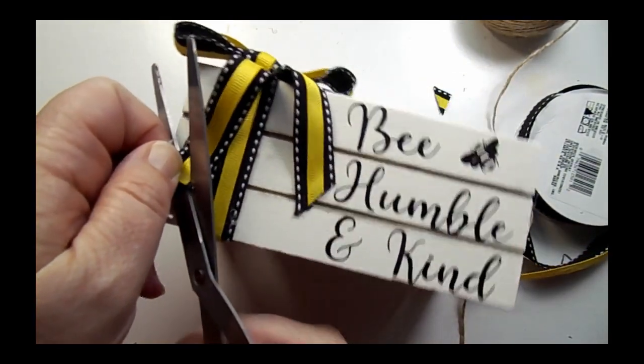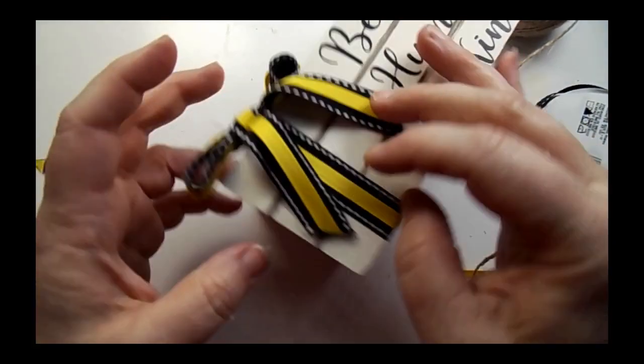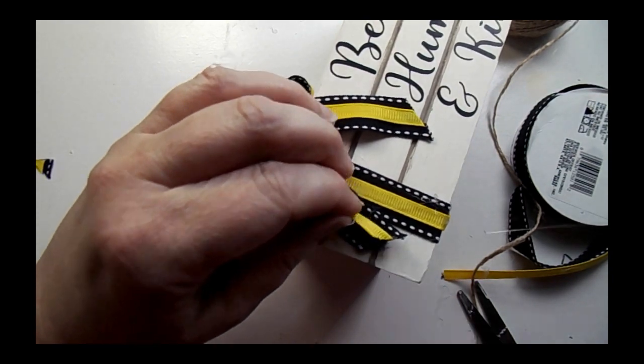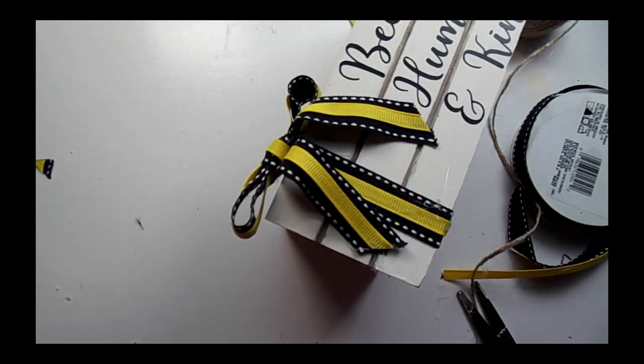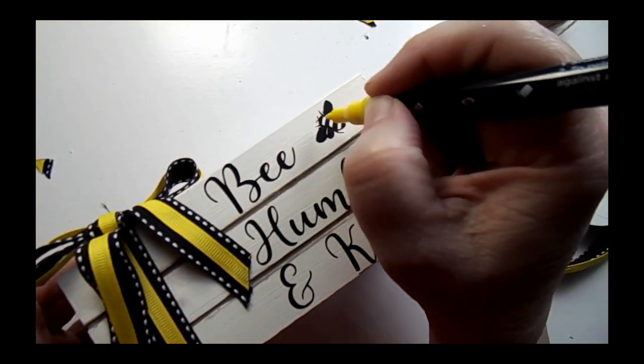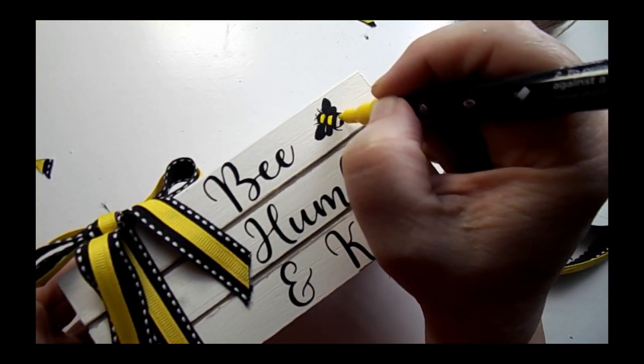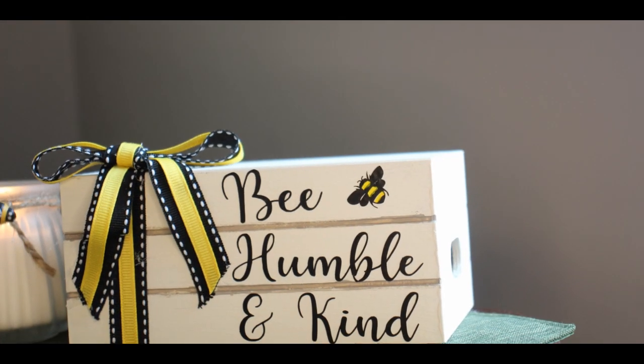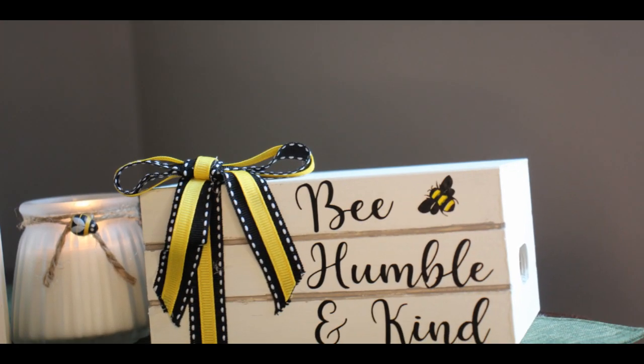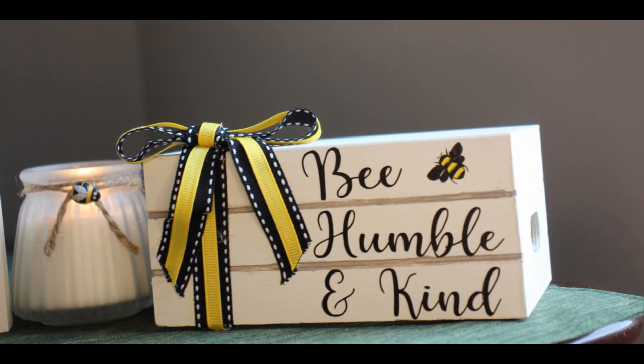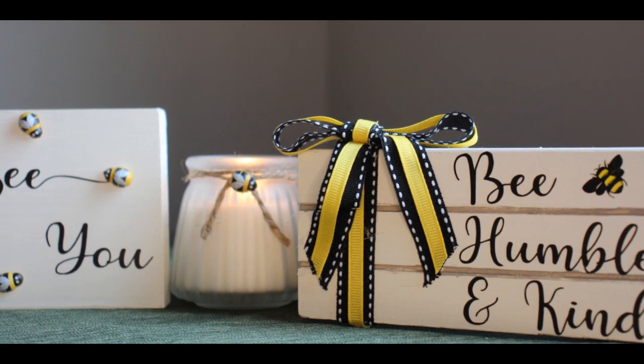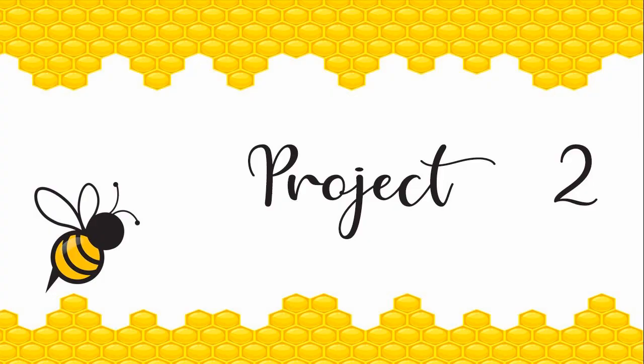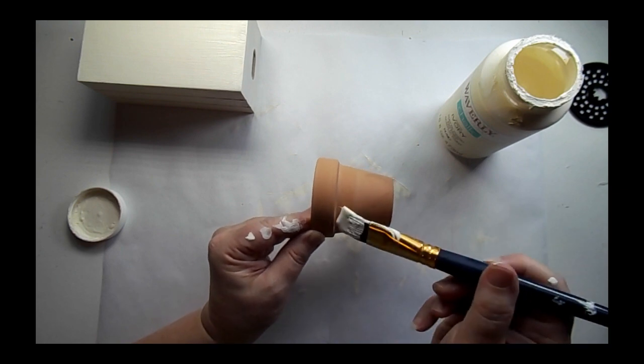I should have snipped it before I glued it down, but I was thinking I was going to leave them straight across, but they needed a little something. Just a dab of glue, and to finish this off I used my Artisto markers, they're just an acrylic paint, and I filled in my bee. That's all there is to it. What do you think?